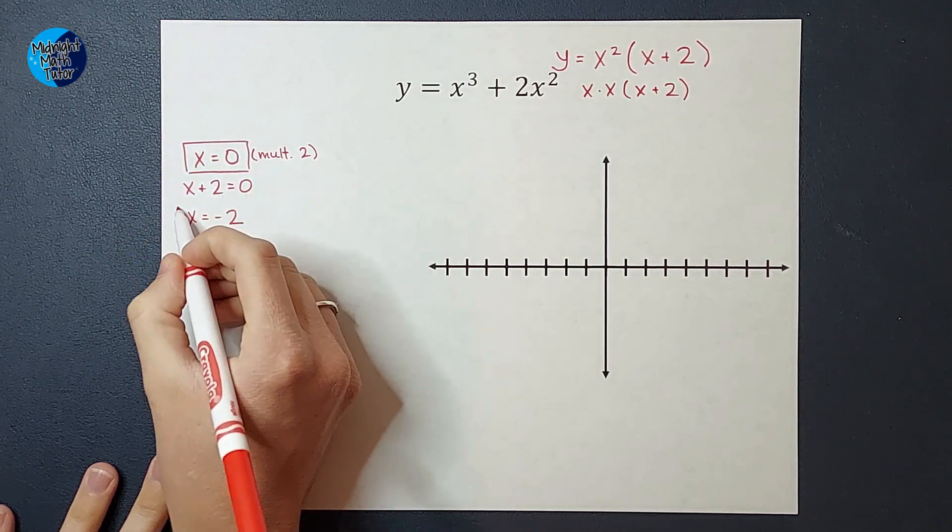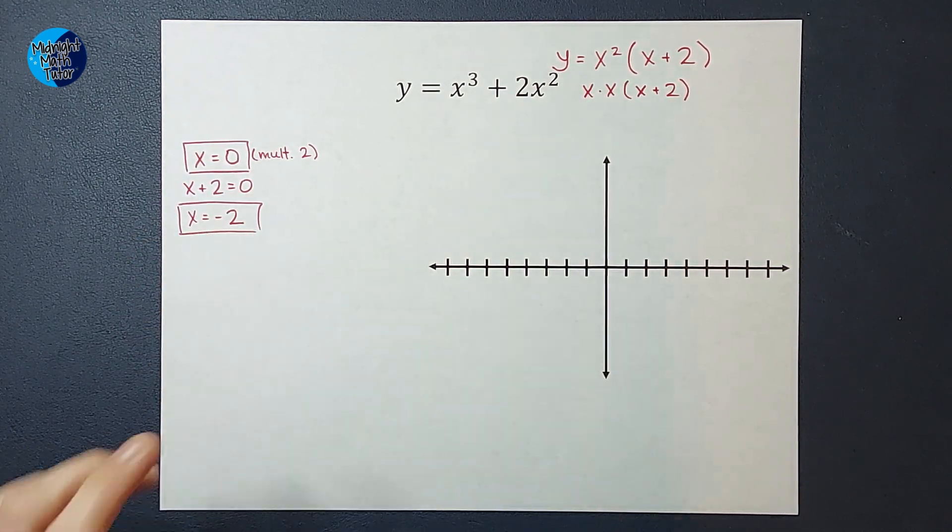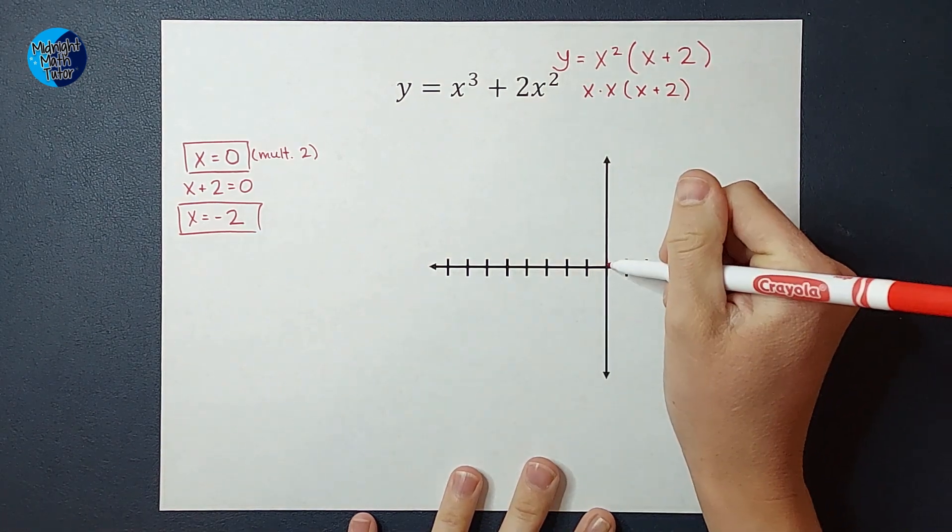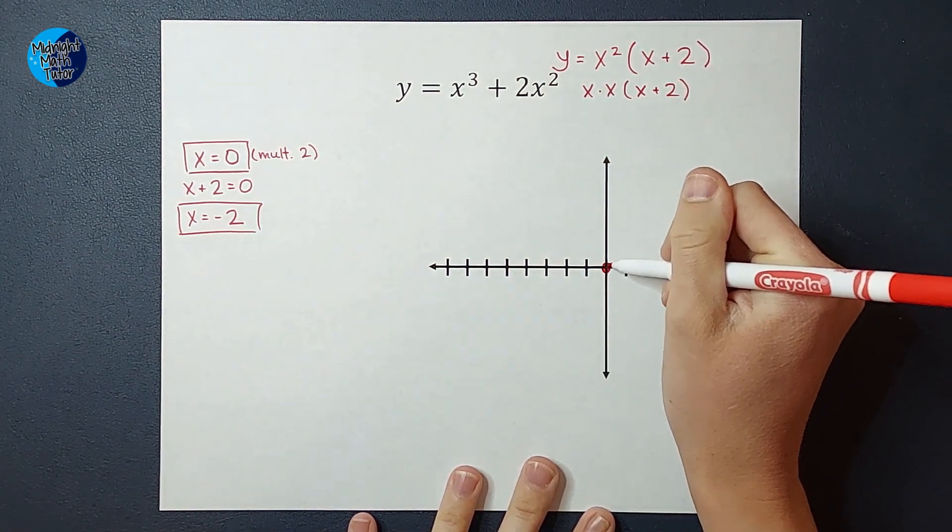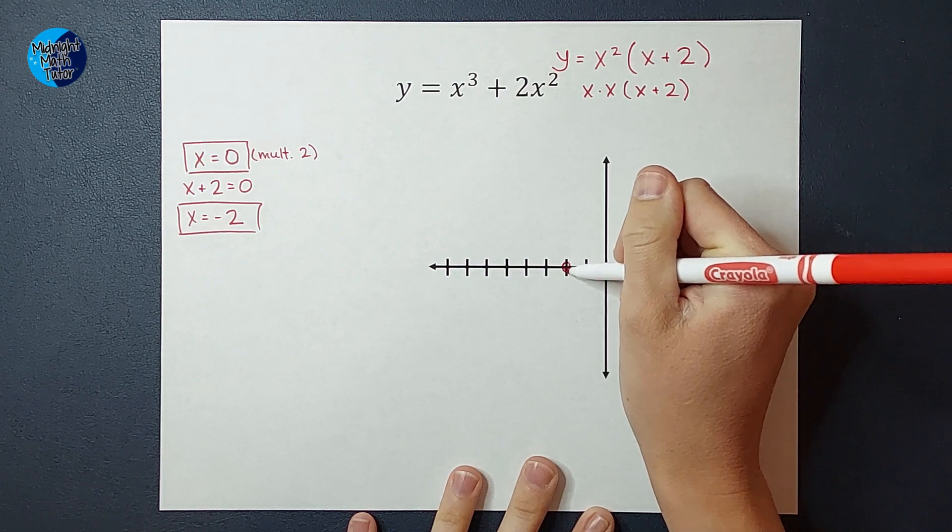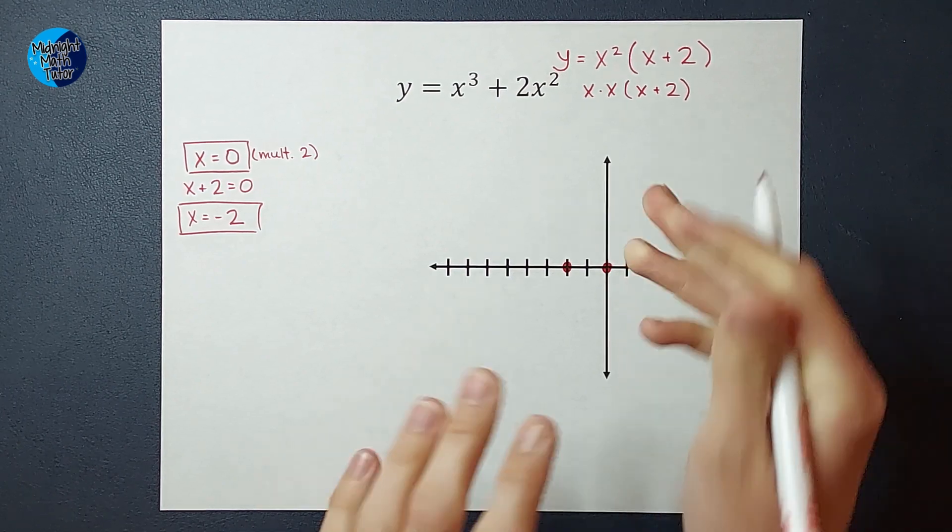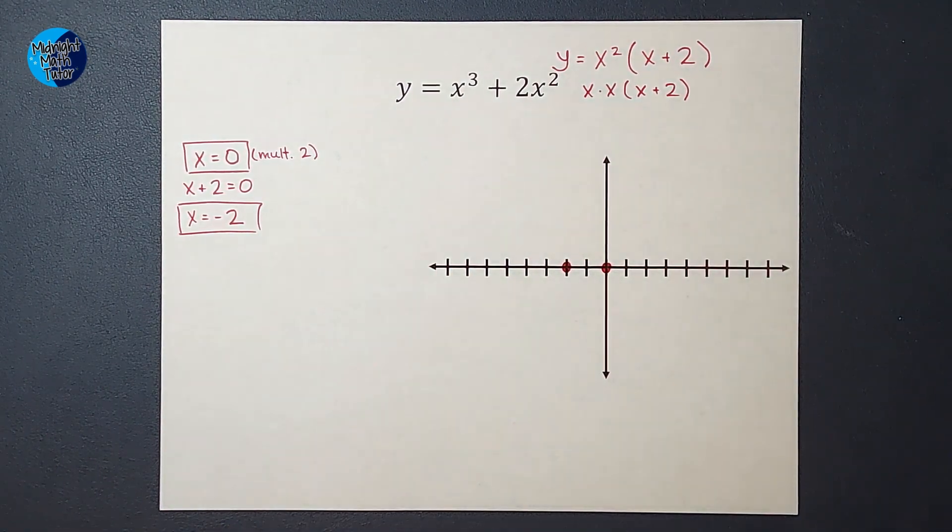So I'm going to go ahead and graph these. We're going to have one zero at zero and one at negative two. Those are my zeros.